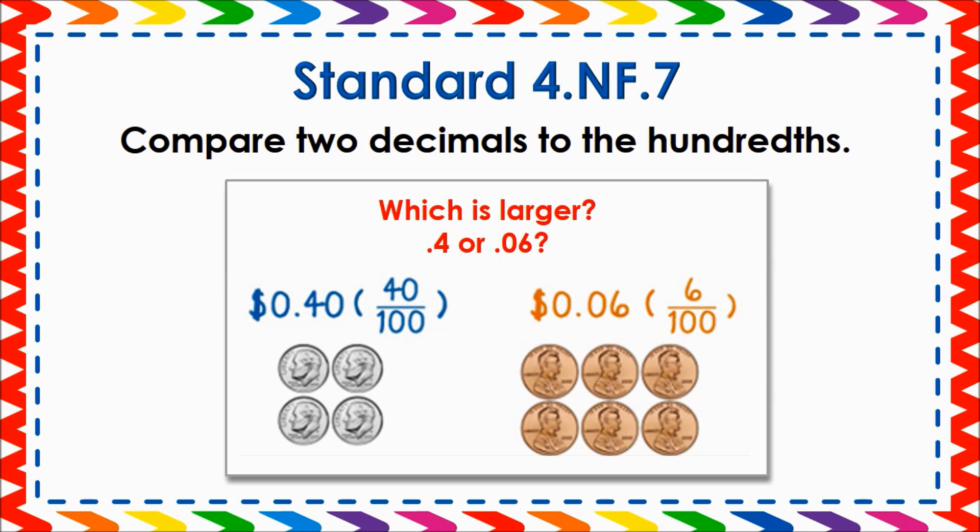NF7: Compare two decimals to hundredths by reasoning about their size. Recognize that comparisons are valid only when the two decimals refer to the same whole. Record comparisons with greater than, equal to, or less than, and justify the conclusions using a visual model.